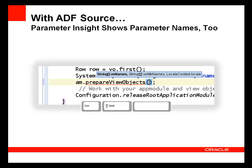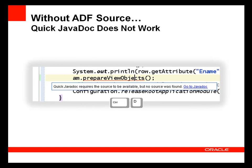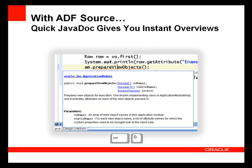With the ADF source installed, however, the parameter names are also displayed in the code editor. Without the ADF source, quick javadoc also isn't available, so pressing Control+D doesn't display javadoc for the ADF methods. But with the ADF source, quick javadoc gives me a detailed overview of the method in the ADF class — in this case, the prepareViewObjects method of oracle.jbo.ApplicationModule.